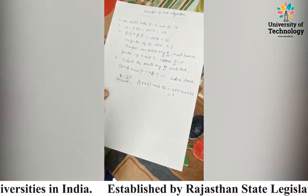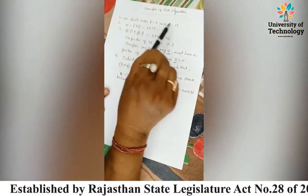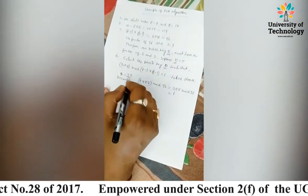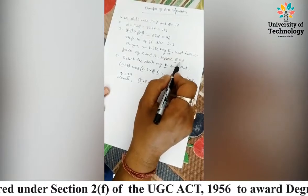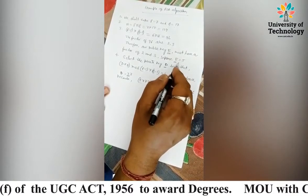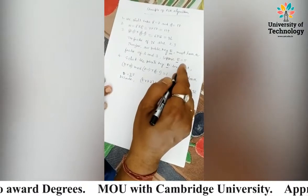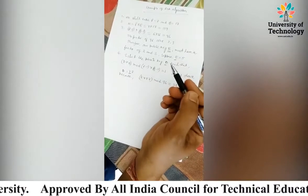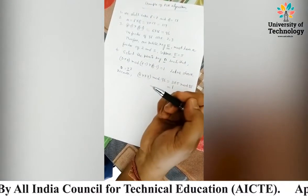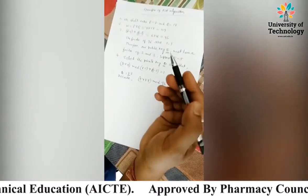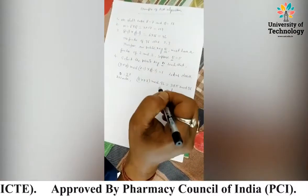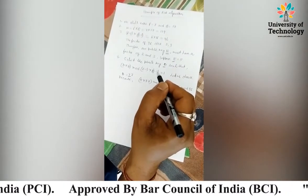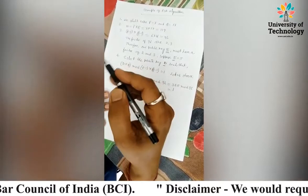So through this RSA algorithm process, using these steps, you can determine which value to use as the public key and which as the private key. The private key is D equals 77 and the public key is E equals 5. Students, I think you have understood this example for the RSA algorithm and how we can solve it.